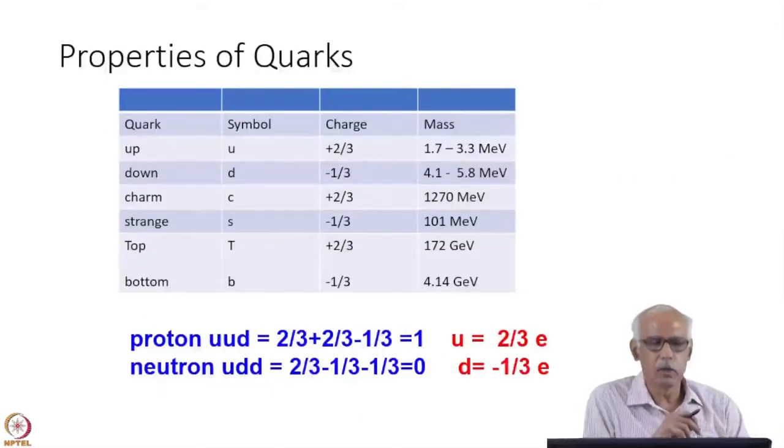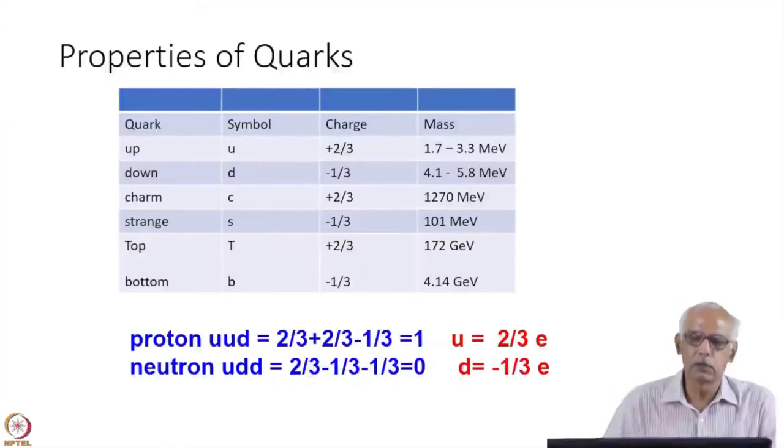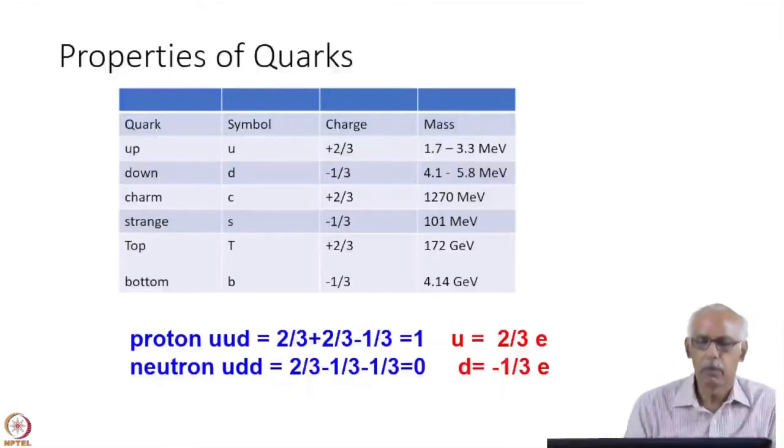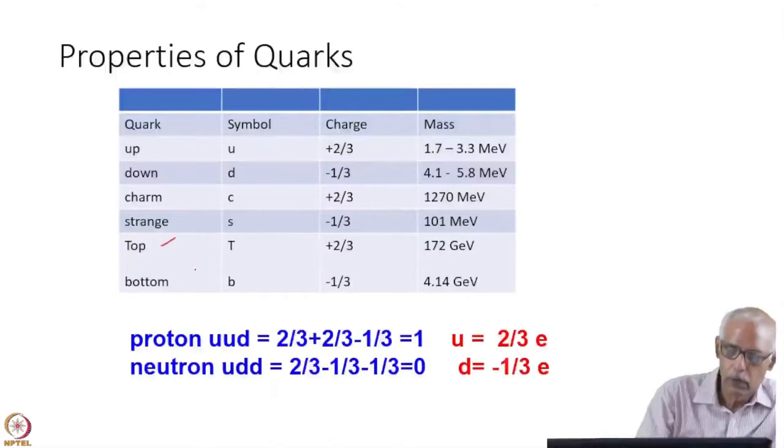Now, where we have gone is, you can see, these quarks, what are the properties? There are six types of quarks which have been discovered. And they are called up, down, charm, strange, top, and bottom. These are the six quarks, and they come in pair: up, down; charm and strange come together; and top and bottom.